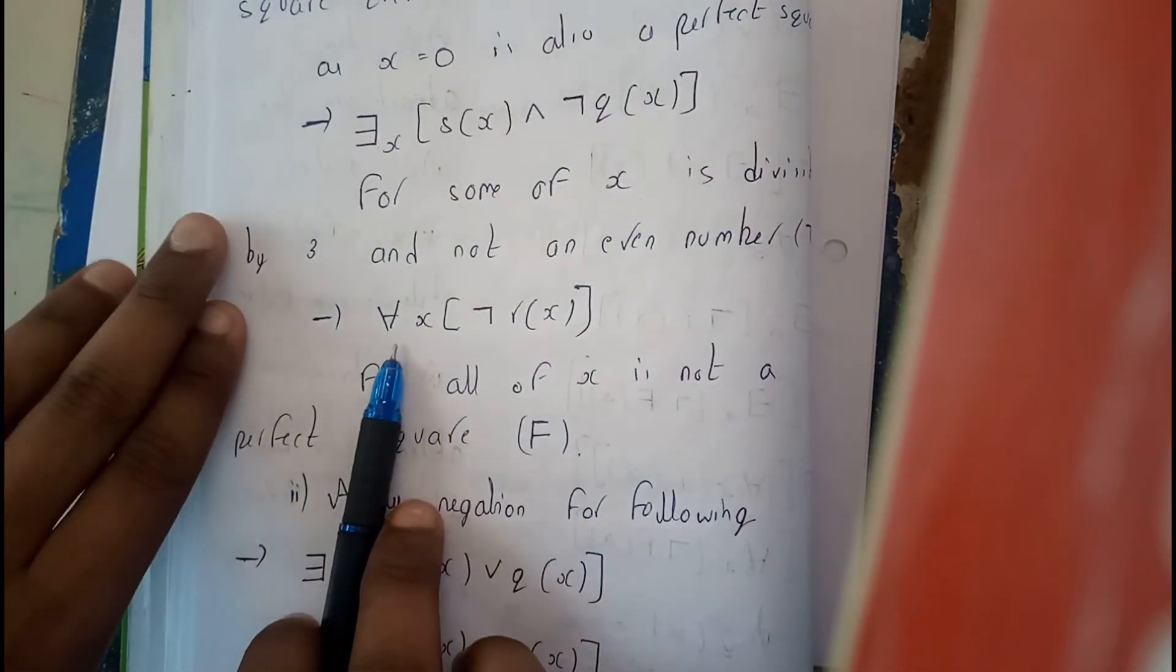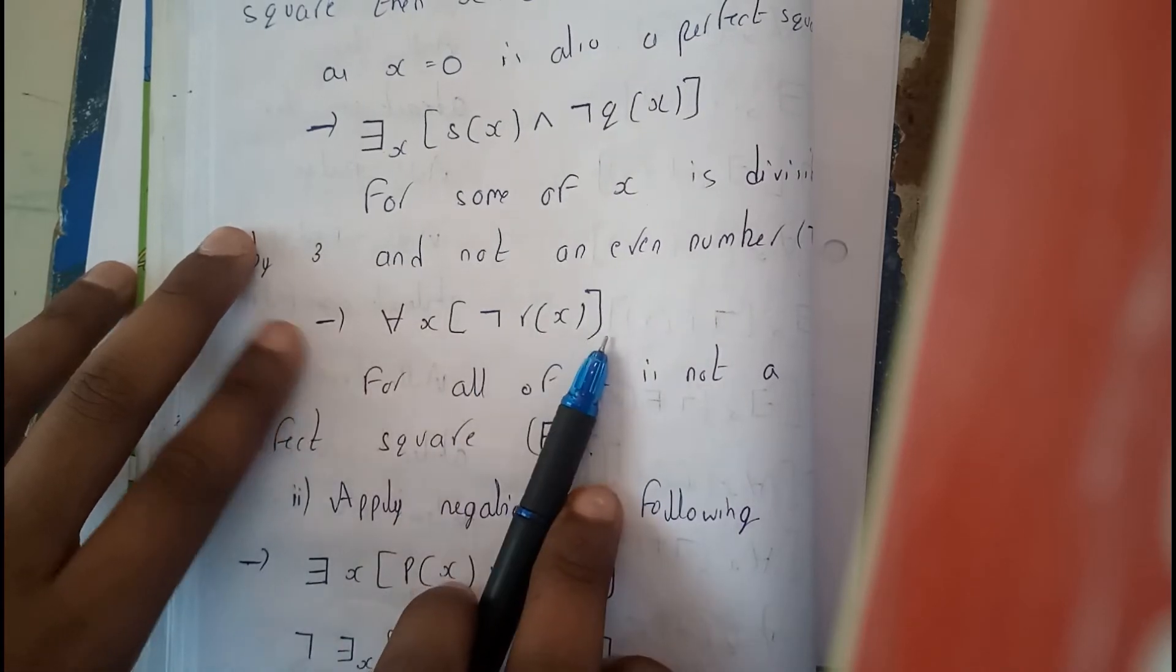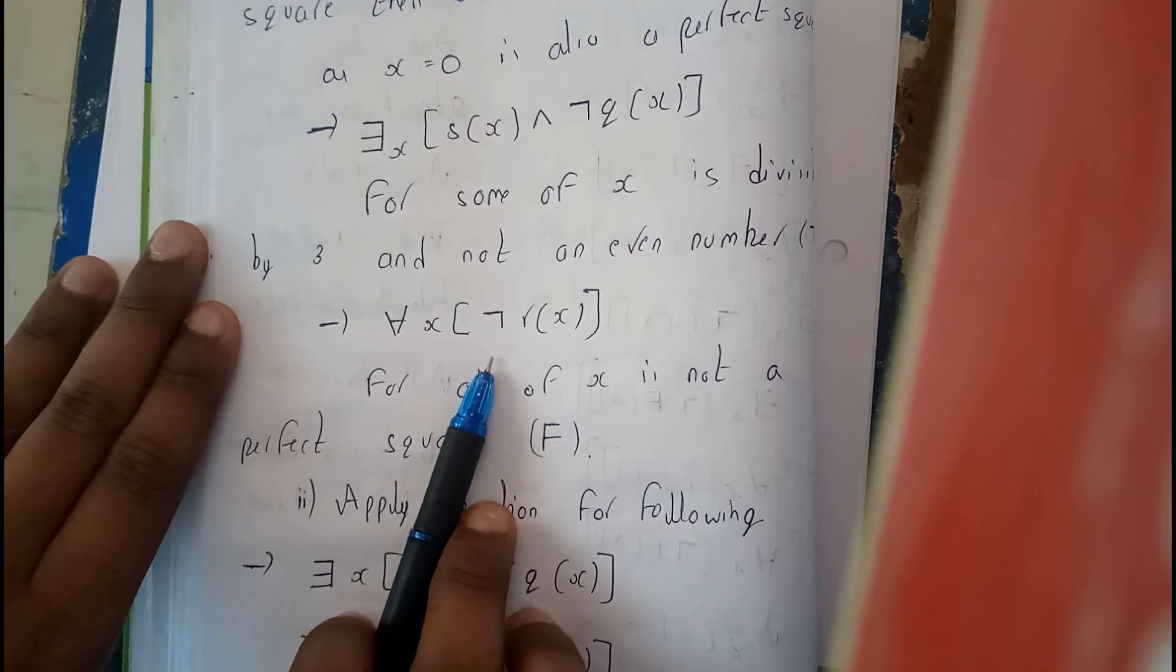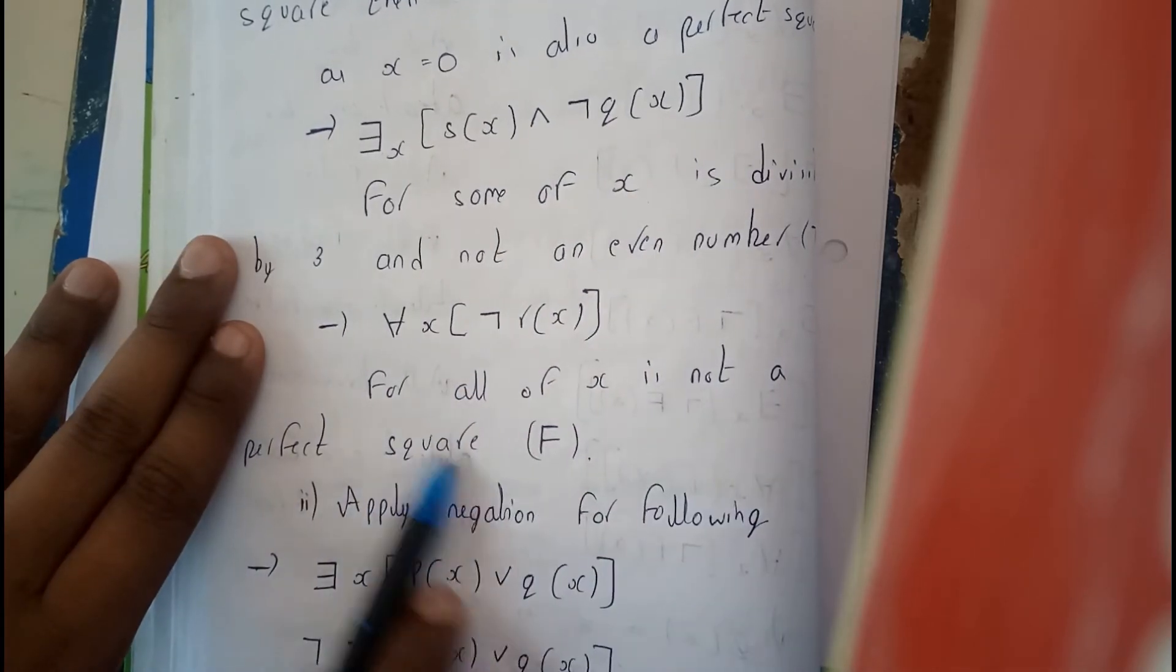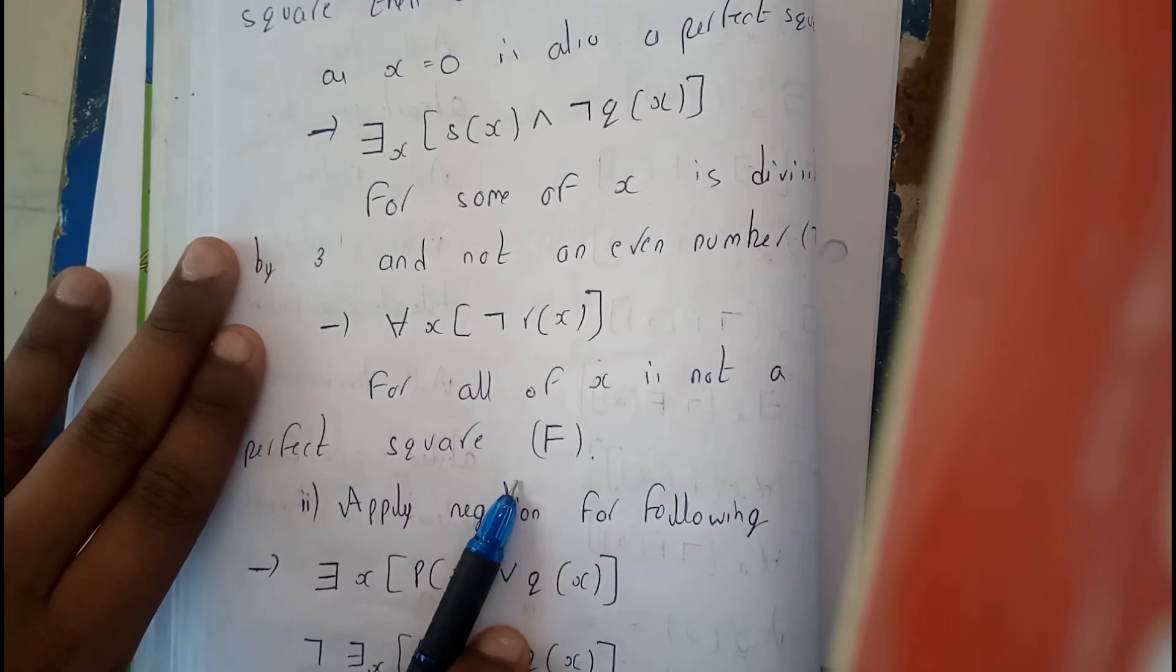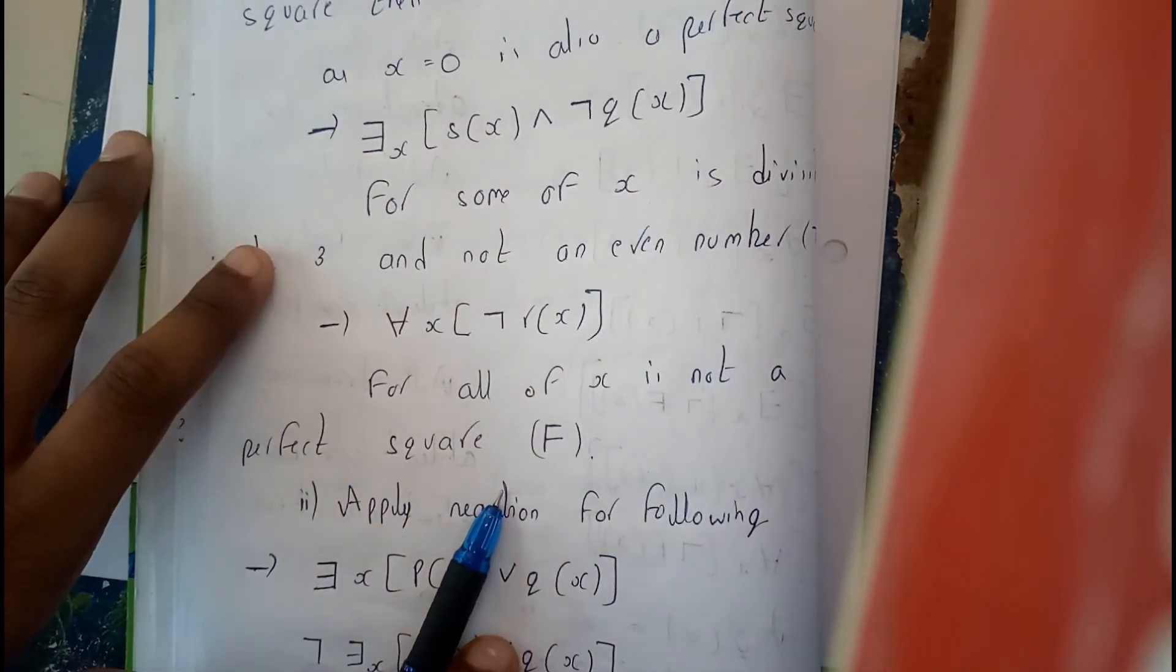We'll be stopping here after this statement. For all, negation of r of x, where r of x, x is a perfect square. Here, negation means x is not a perfect square. For all, x is not a perfect square. Is that true? No. It's not true. As there are few perfect squares in the numbers. So this is false.